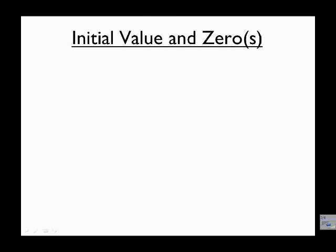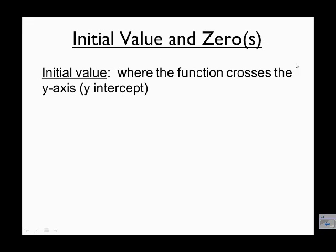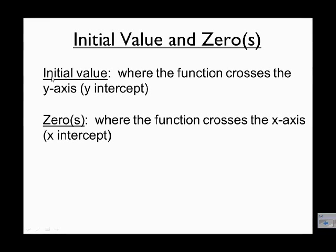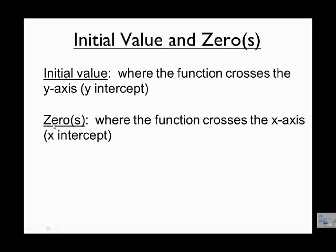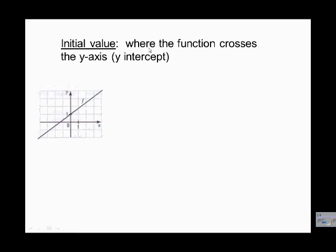In this video we're going to take a look at initial value and zeros. Initial value is where the function crosses the y-axis — a lot of you probably know that as the y-intercept. The zeros is where the function crosses the x-axis, also called the x-intercept. We can only ever have one initial value, but it is possible to have more than one zero. It's also possible to have no initial value and possibly no zero as well.